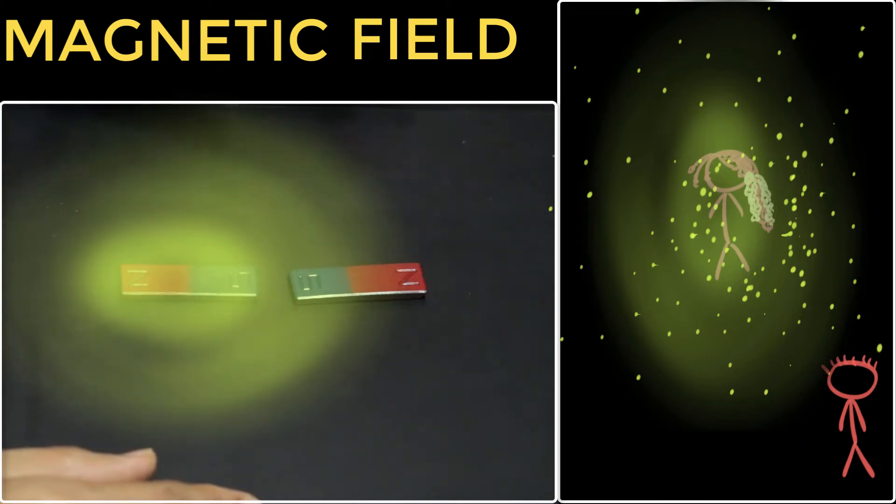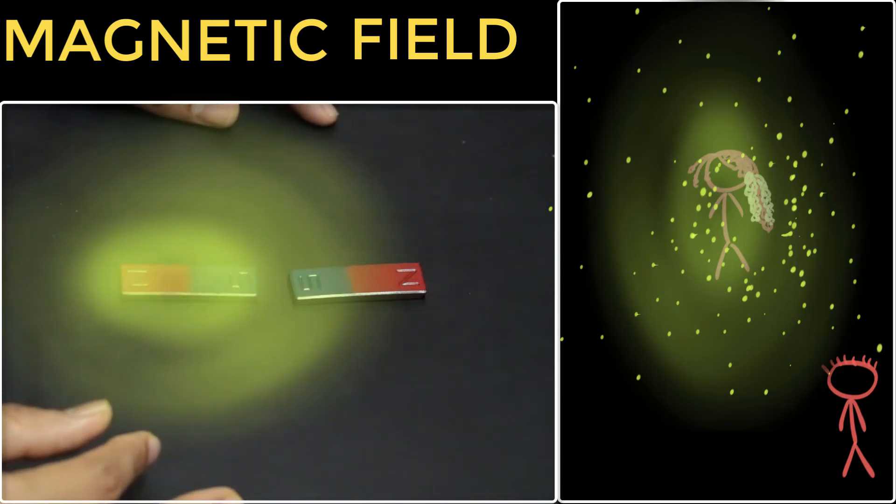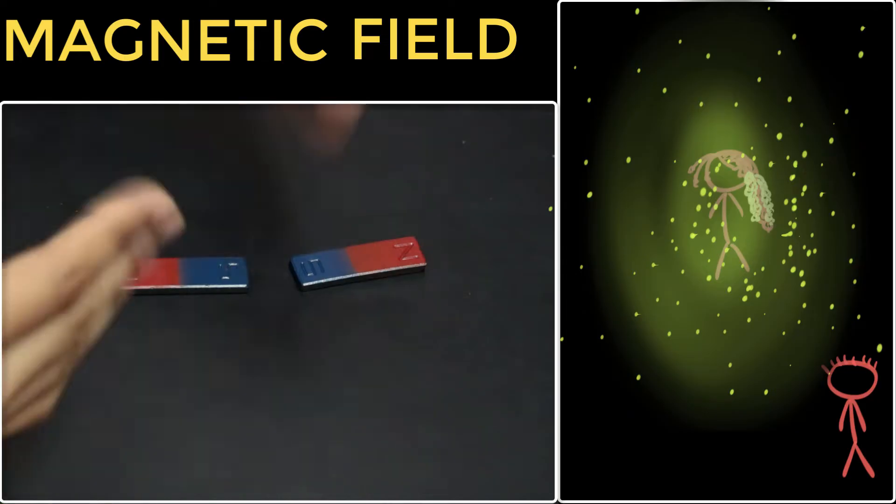But another question we could ask over here is, if there are no real particles that we can detect, then how do we know that this magnetic field is real? That it really is present, it exists. How do we know that? Well, here's how.